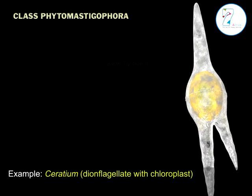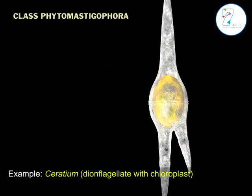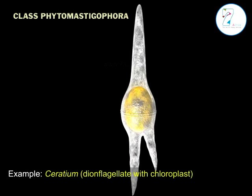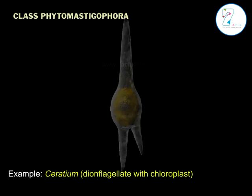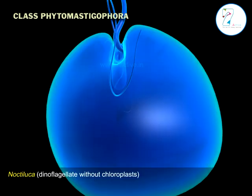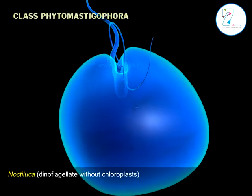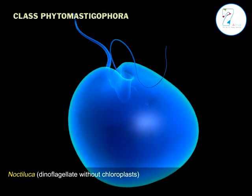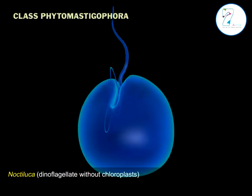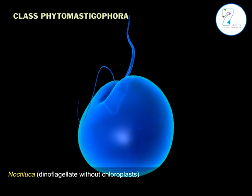Further examples include Ceratium, dinoflagellates with chloroplasts, and Noctiluca — a dinoflagellate without chloroplasts.